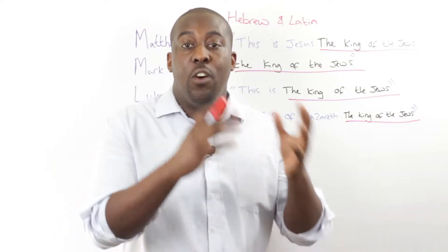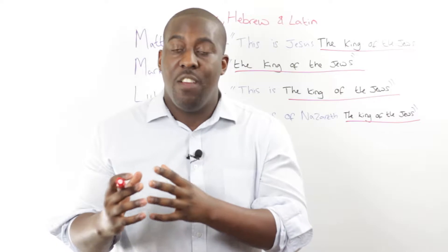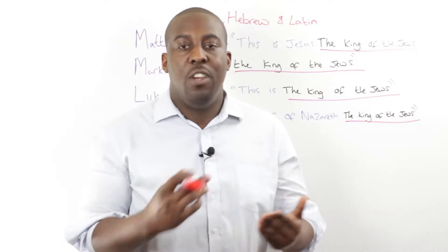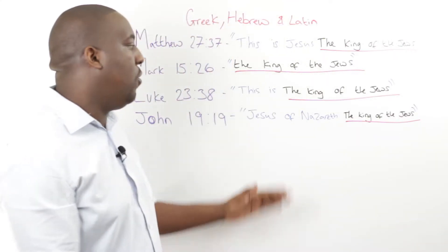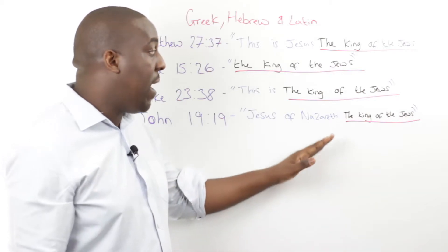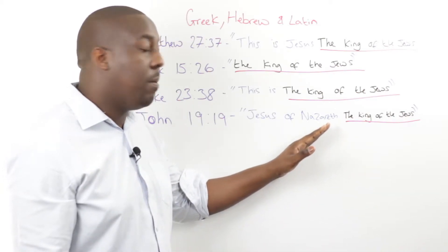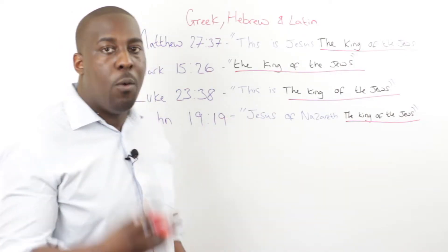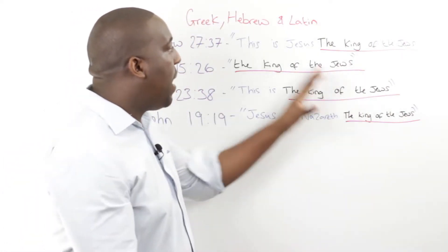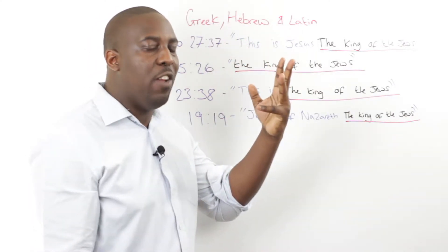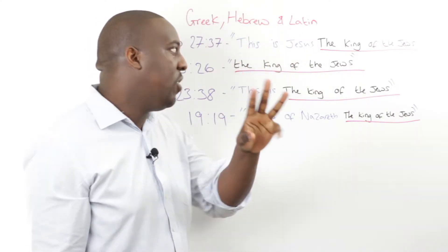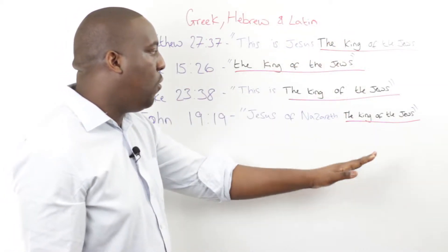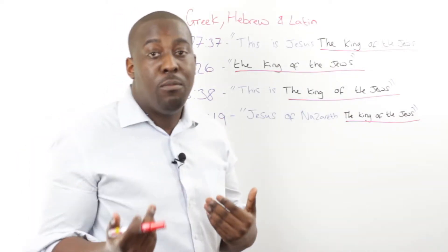When you translate into a different language, you're not always going to get a word-for-word translation. This doesn't mean you're losing the context or the meaning — different languages have different rules. It might come down to how you translate a particular name, a place, or the person you're referring to. The sign was written in three languages, which means you could have at least three different variations, and yet looking at it in its entirety, pretty much the first three accounts say the exact same thing.